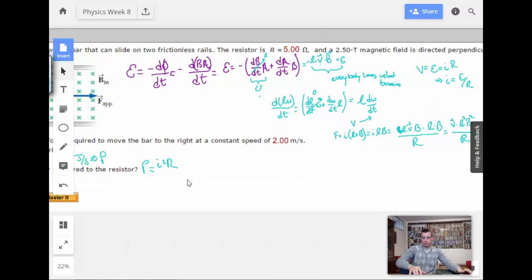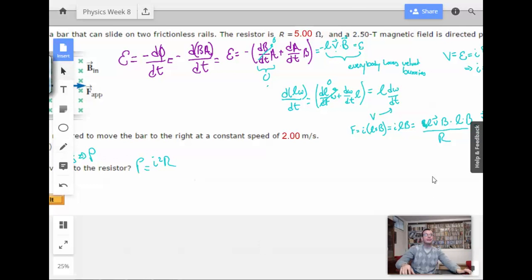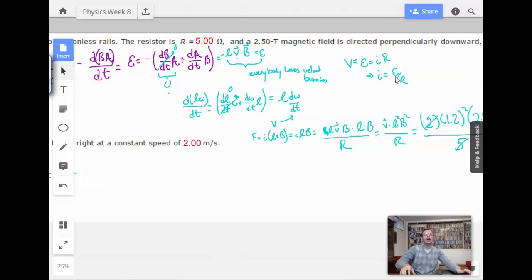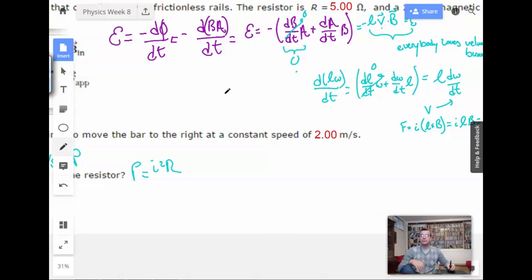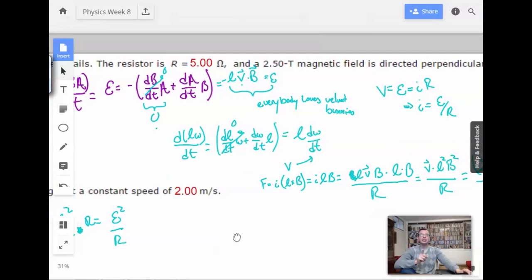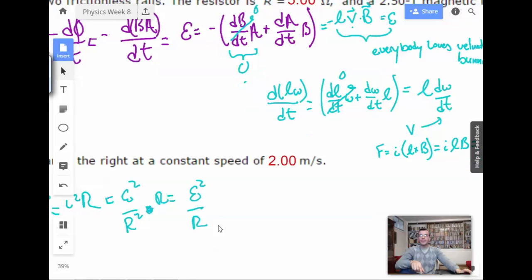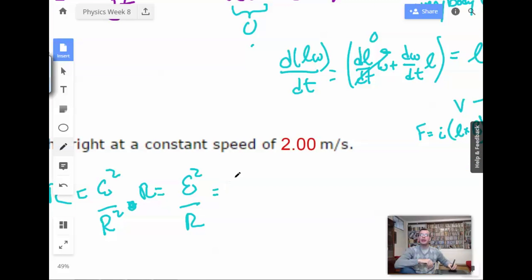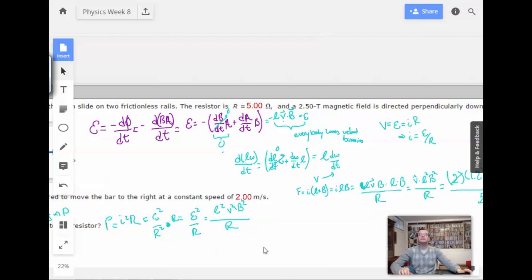So, that's going to be, we look up here, IR, Epsilon over R. Epsilon squared over R squared. Okay. Times R. Which will be Epsilon squared over R. All right. So then we know Epsilon is LVB. Okay. So this is going to be L squared, V squared, B squared over R.